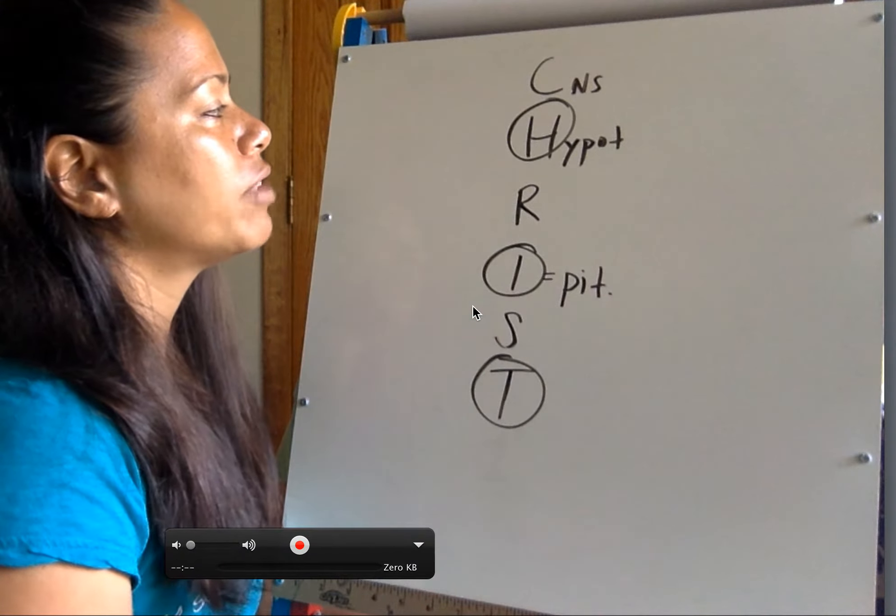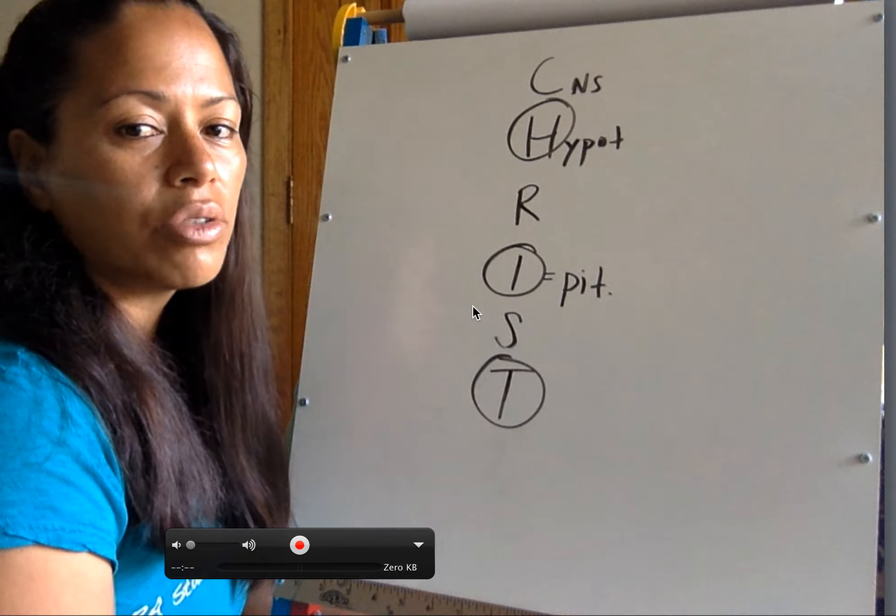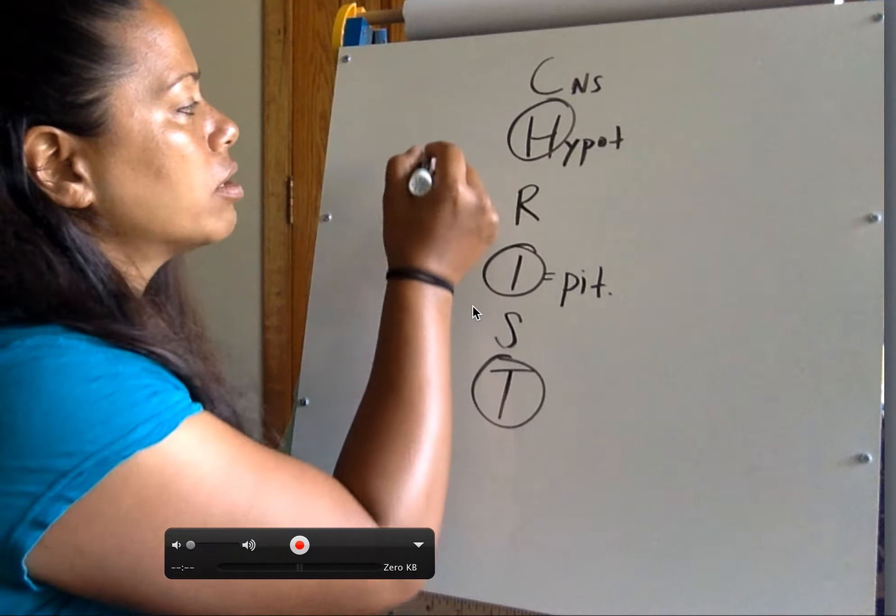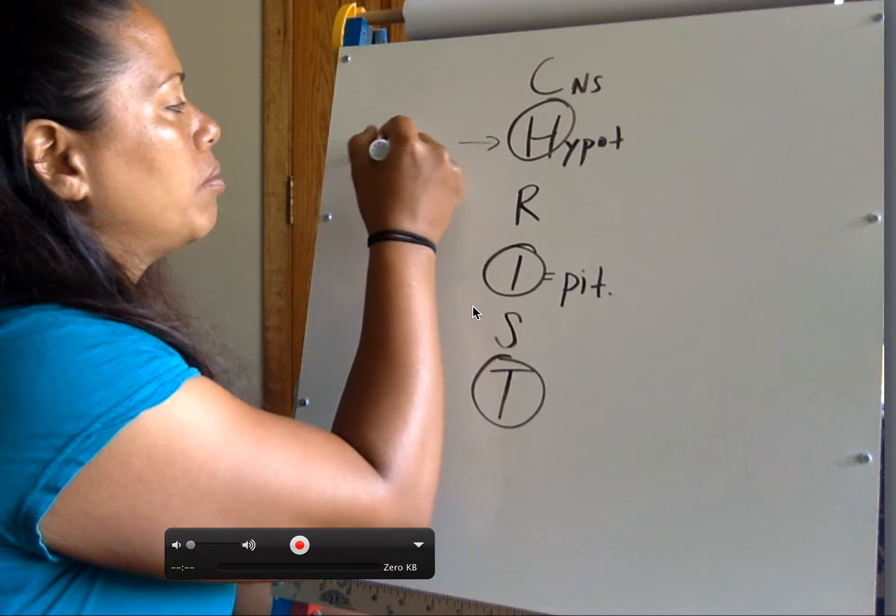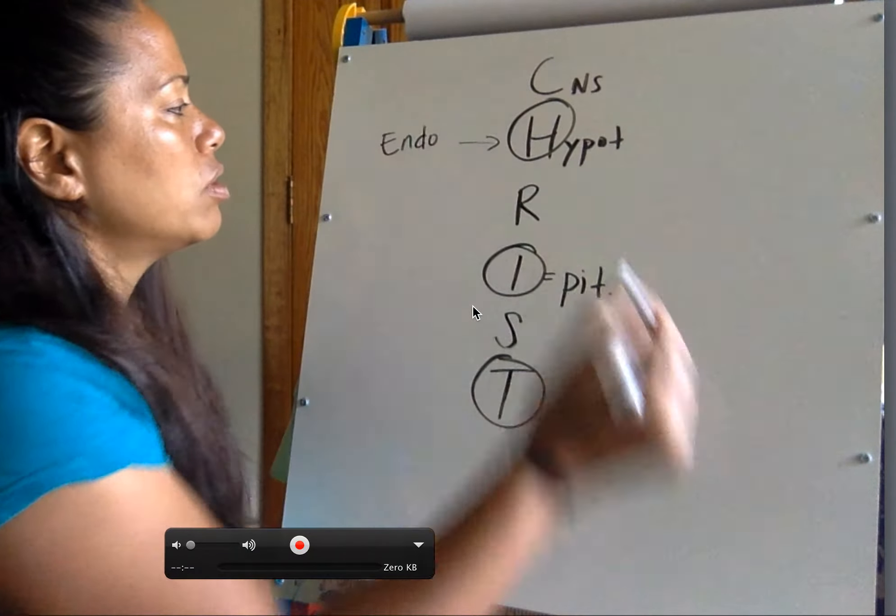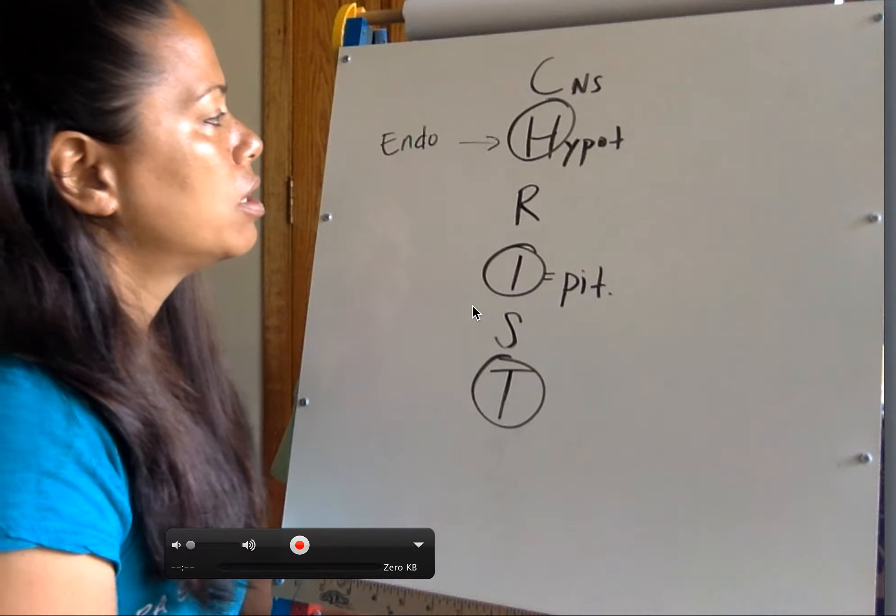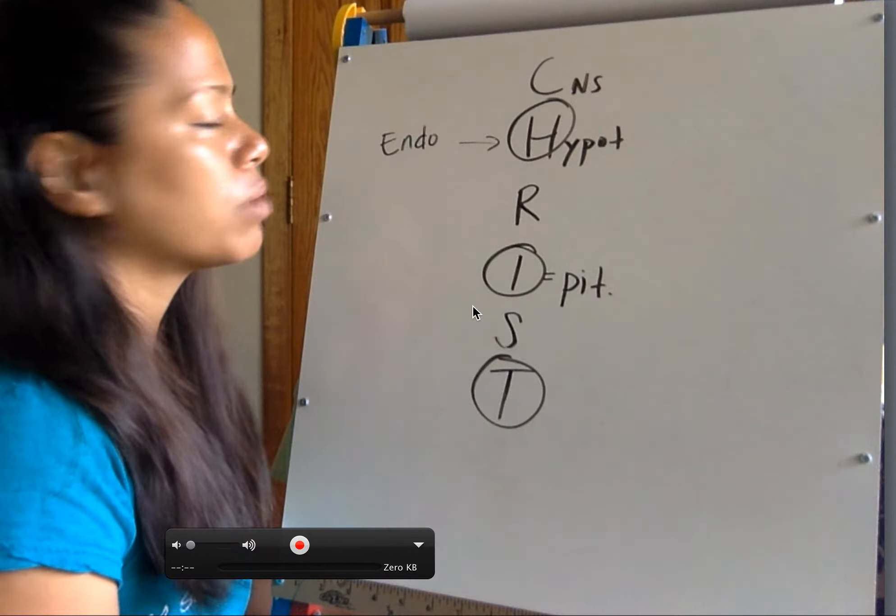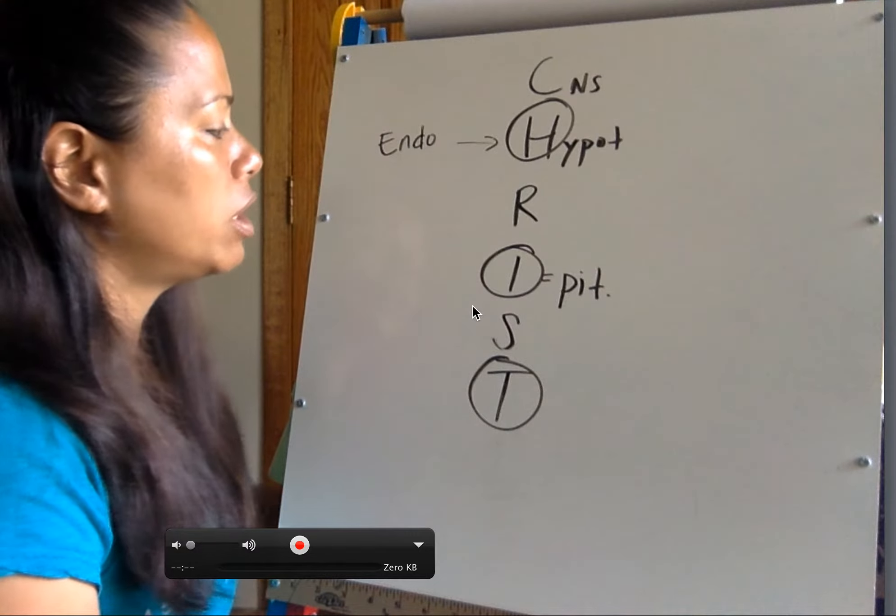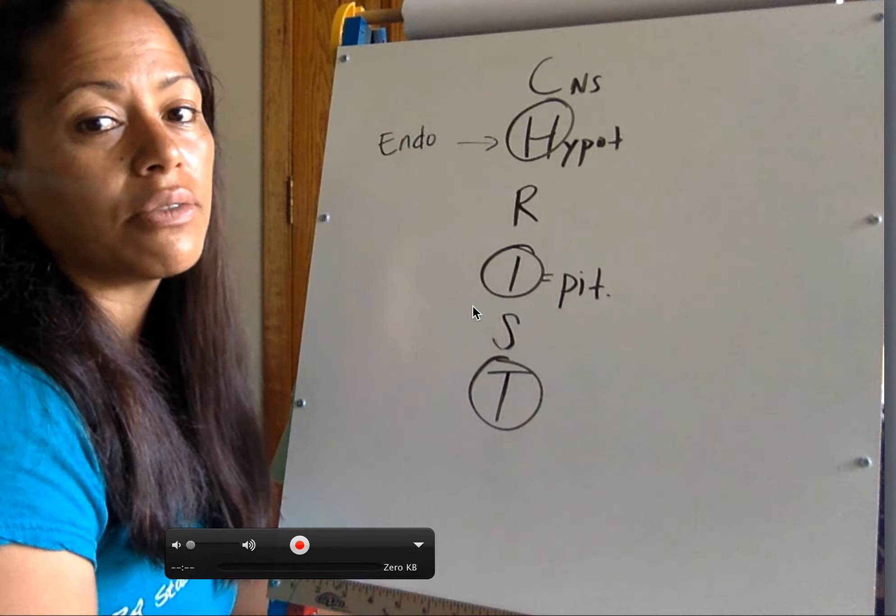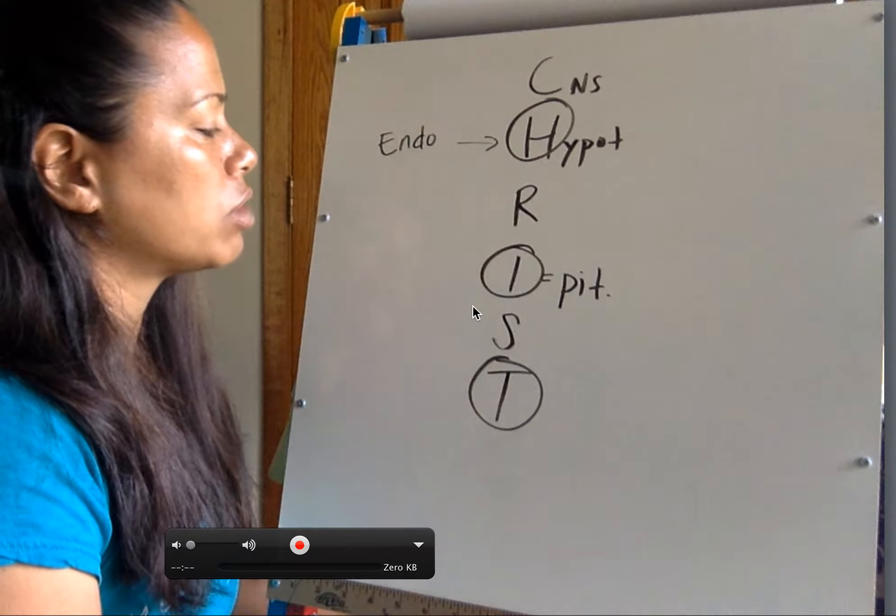So the CNS is part of the nervous system. Hypothalamus is also a part of the nervous system, but it's also the transition point. Because it makes hormones, it's a part of the endocrine system as well. So endocrine, again, was the release of hormones into the bloodstream associated with controlling different organs or different structures in the body.